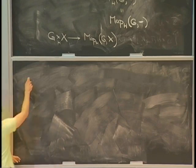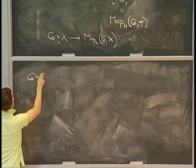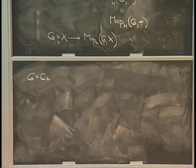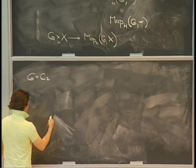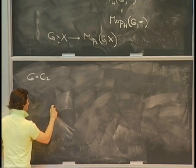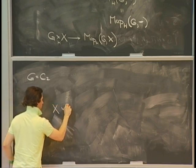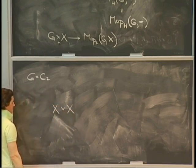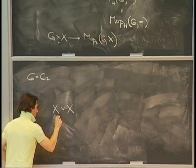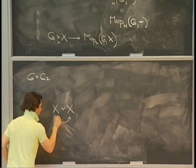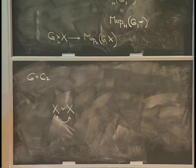So let me show you why that's not necessarily going to work the same way. Let me just do an example — the only examples I ever seem to do are with C2. I'm going to look at including a wedge of things, but now the group acts by swapping the two factors. I'm including this into the product of those two things, and again the group acts by swapping the two factors.